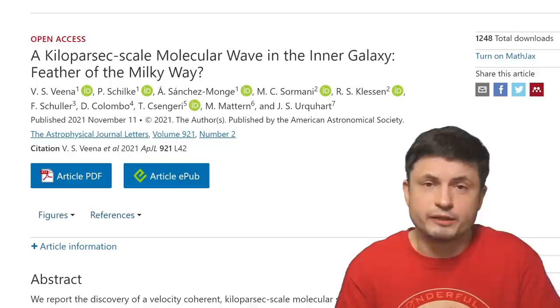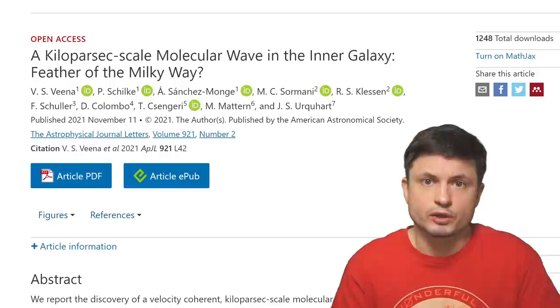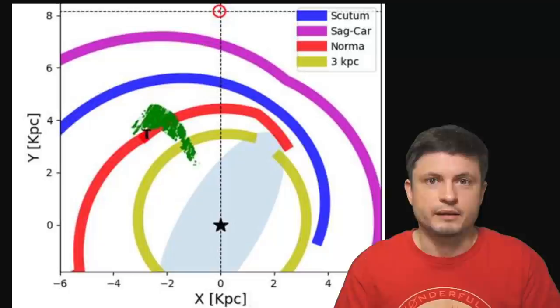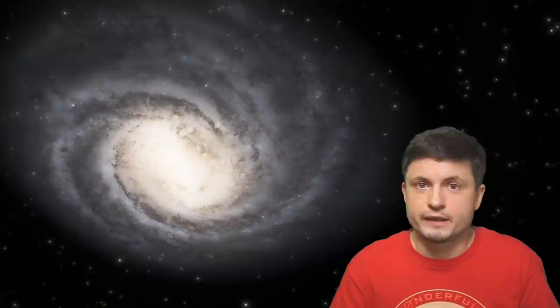But this recent study was surprisingly talking about a similar yet a completely different structure. One located in the region known as the normal arm, so this arm right here, and that also seemed to possess a lot more wavy structures on the inside, and also be a little bit larger in size, roughly around 6,000 light years across.